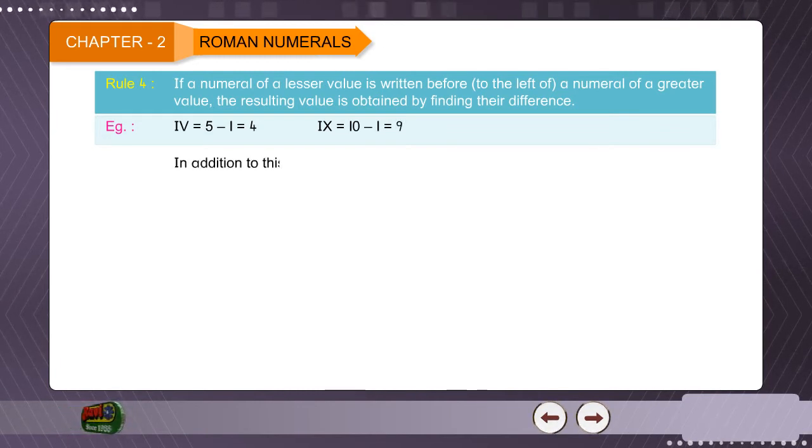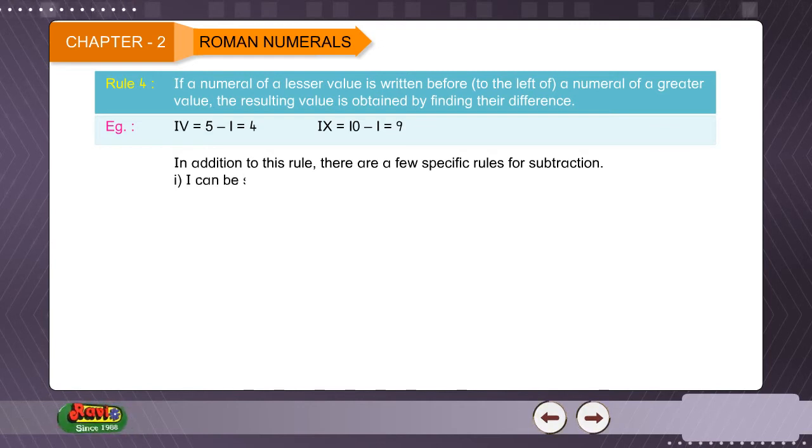In addition to this rule, there are a few specific rules for subtraction. 1. Roman numeral I can be subtracted from Roman numeral V and X only. 2. Roman numeral V can never be subtracted.